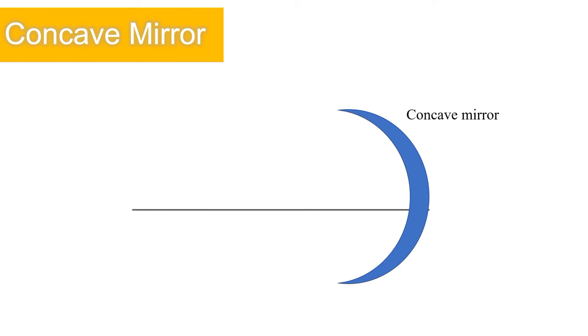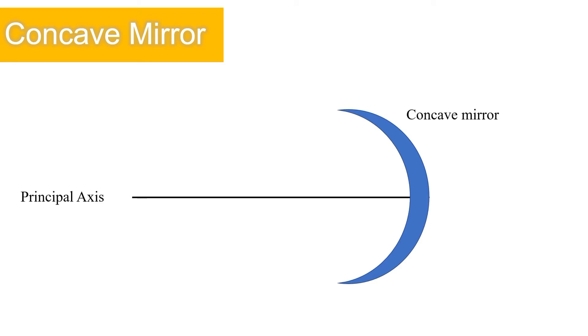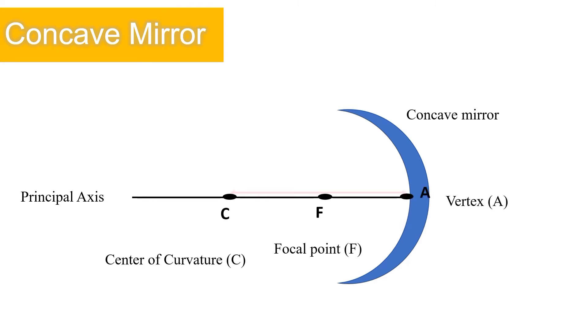Are you familiar with the terms used in a concave mirror? In a concave mirror, there is the principal axis, the center of curvature, the focal point, the vertex, the radius, and the focal length.